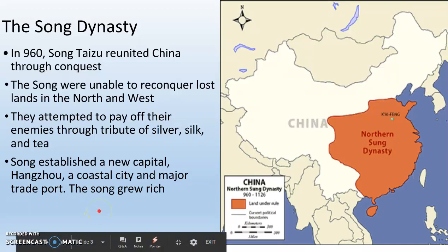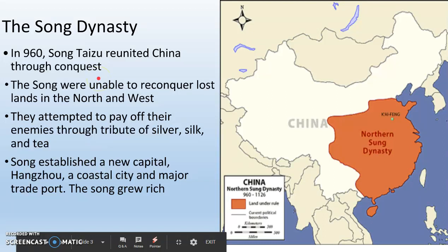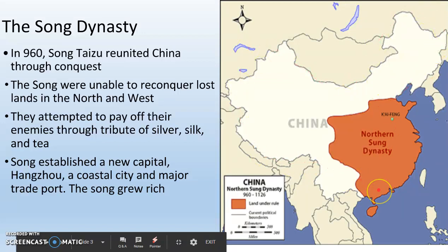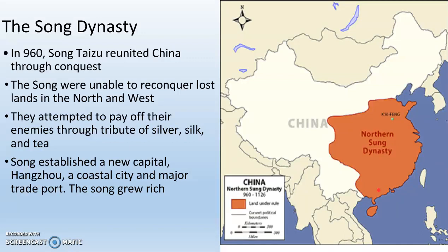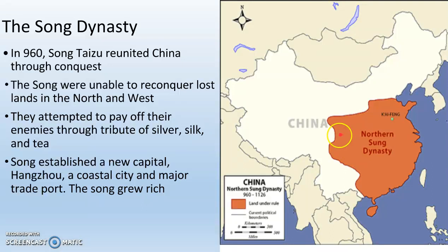We talked about ancient China, and now we're moving on to medieval China. This is after the Warring States period. China has been unified by the Song Dynasty through conquest by 960. But China is much smaller than it was prior to the Song — this is the extent of medieval China under the Song Empire compared to modern day China, a lot smaller. They have lots of enemies, especially coming from the north — the Mongols. They attempted to pay off these enemies through tribute of silver, silk, and tea — the three big things the Chinese produced.